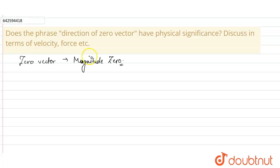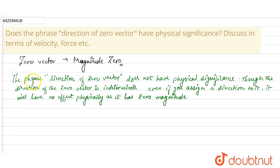Does the direction of the zero vector have physical significance? The phrase 'direction of zero vector' does not have any physical significance. Though the direction of the zero vector is indeterminate, even if you assign a direction to it, it will have no effect physically as it has zero magnitude.